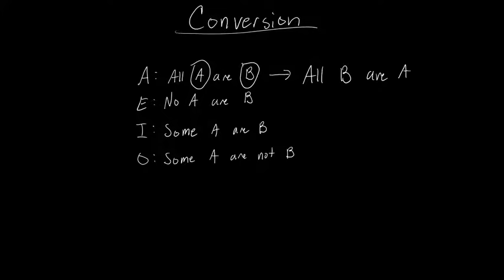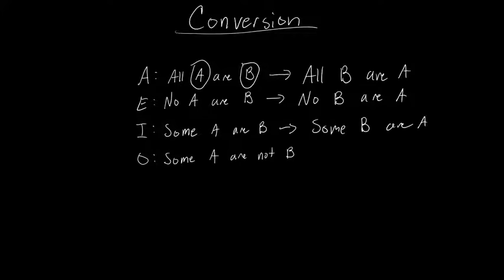If you have 'no A are B', the converse is 'no B are A', and so on and so forth. Some B are A, and some B are not. And that's really all there is to it. Sometimes people find this tricky because it's remarkably simple, so they think they missed something. All you need to do is just swap the subject and the predicate, and you'll have the converse.